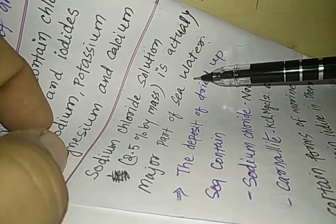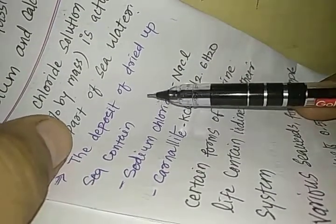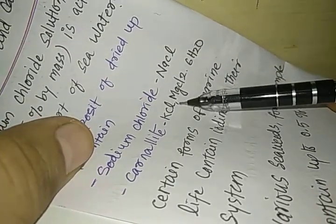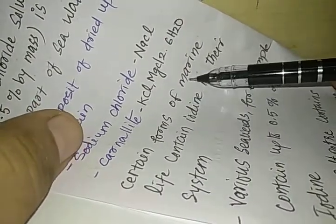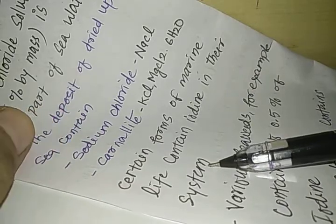The deposit of dried up seas: if you look at the deposits when a sea dries up, the deposit contains sodium chloride (NaCl), carnallite which is KCl·MgCl2·6H2O. Certain forms of marine life contain iodine in their system.